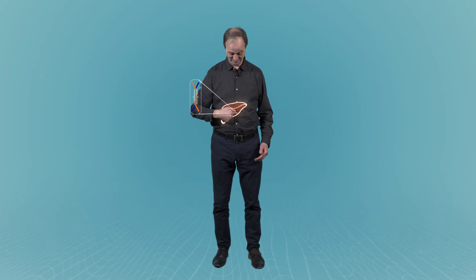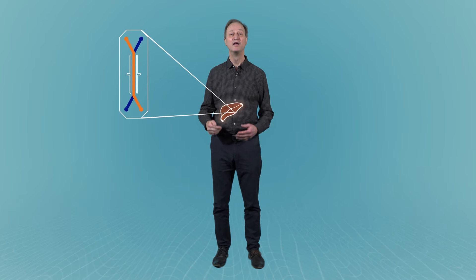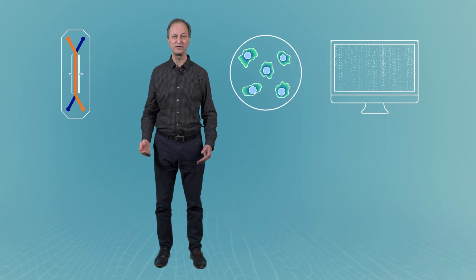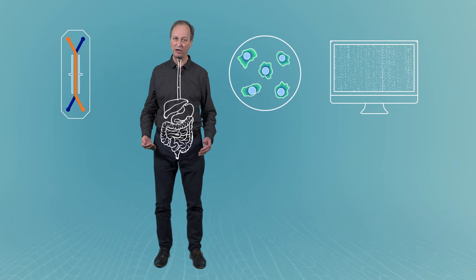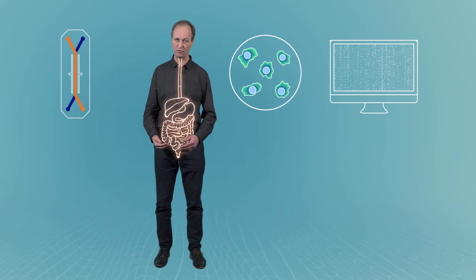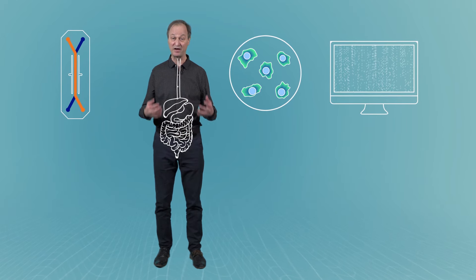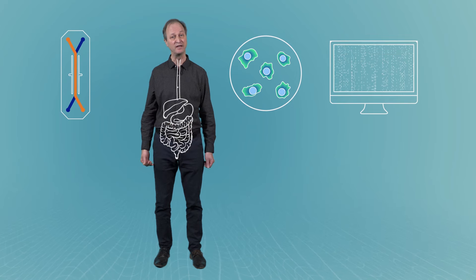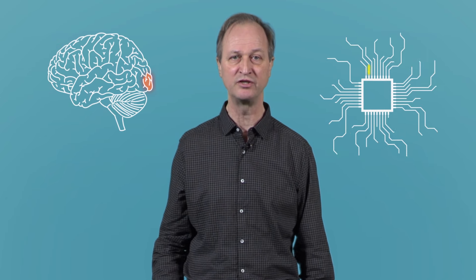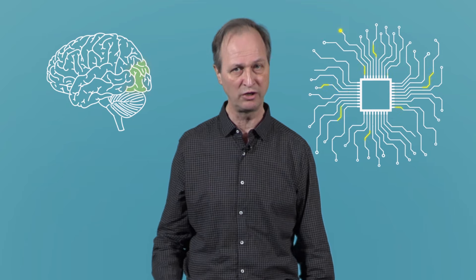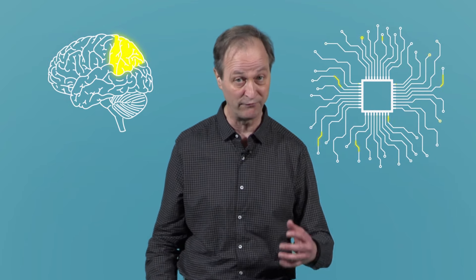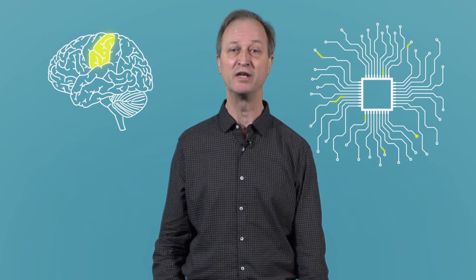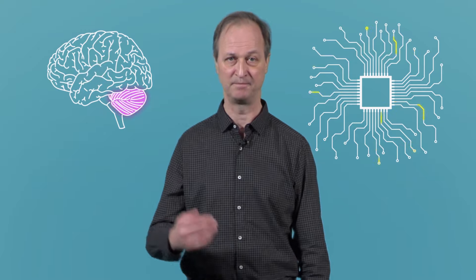Organs on a chip, tissue cultures and computer models can sometimes more closely mimic human biology. They can help us understand what happens inside our body to the things we eat. The good news is that new science and technology are making alternatives to animal testing not only viable, but in some cases even better.